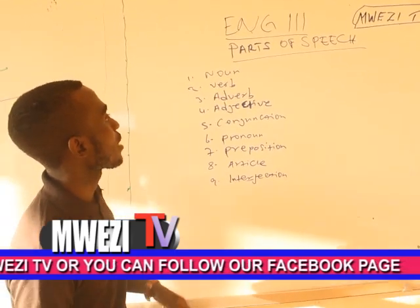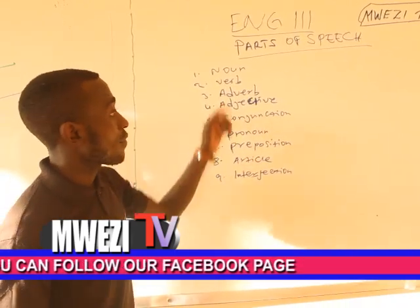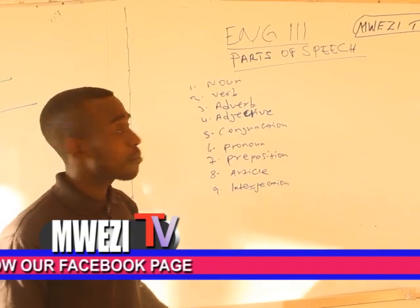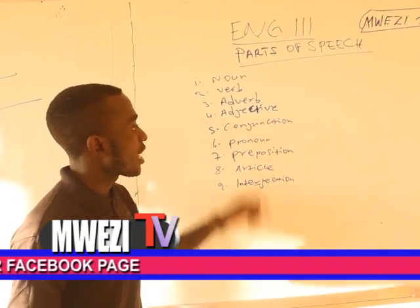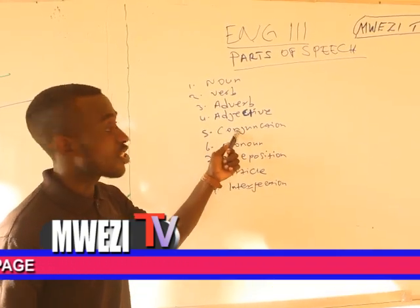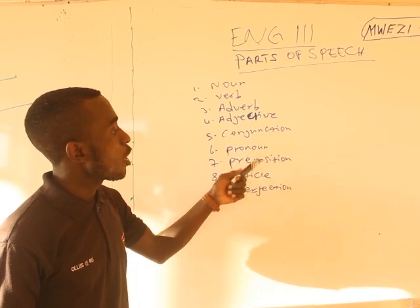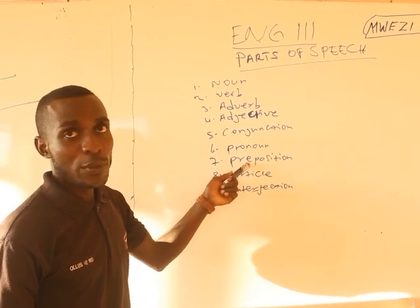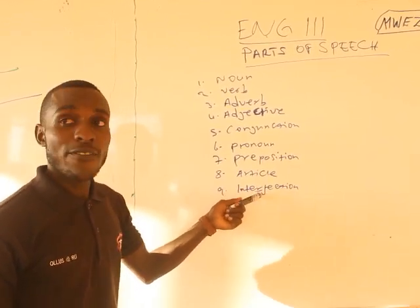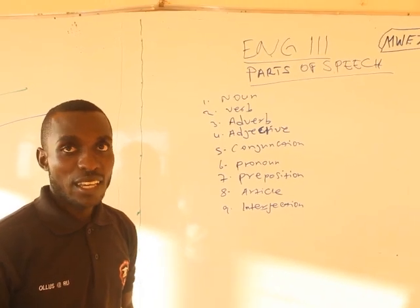The nine parts of speech are: the noun, the verb, the adverb, the adjective, the conjunction, the pronoun, the preposition, the article, and finally the interjection.